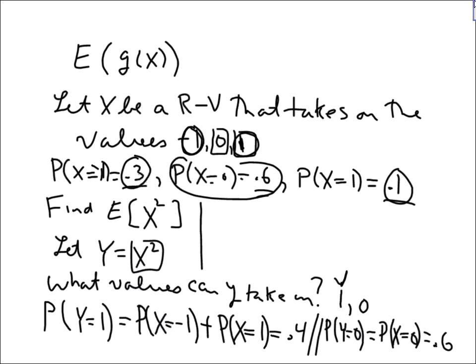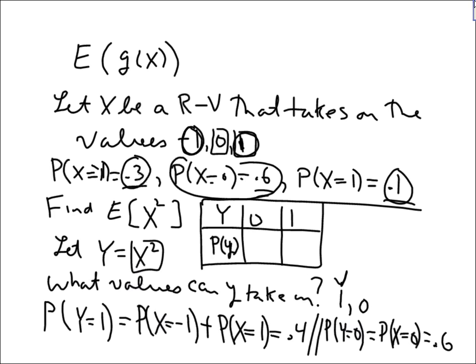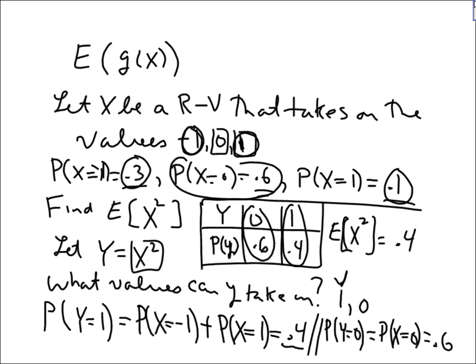We make up our little table. Y can be zero or one. The probability that Y equals zero is 0.6, and the probability that Y equals one is 0.4. So E[Y], that is E[X²], equals zero times 0.6 plus one times 0.4, which gives us zero plus 0.4 — so E[X²] equals 0.4.